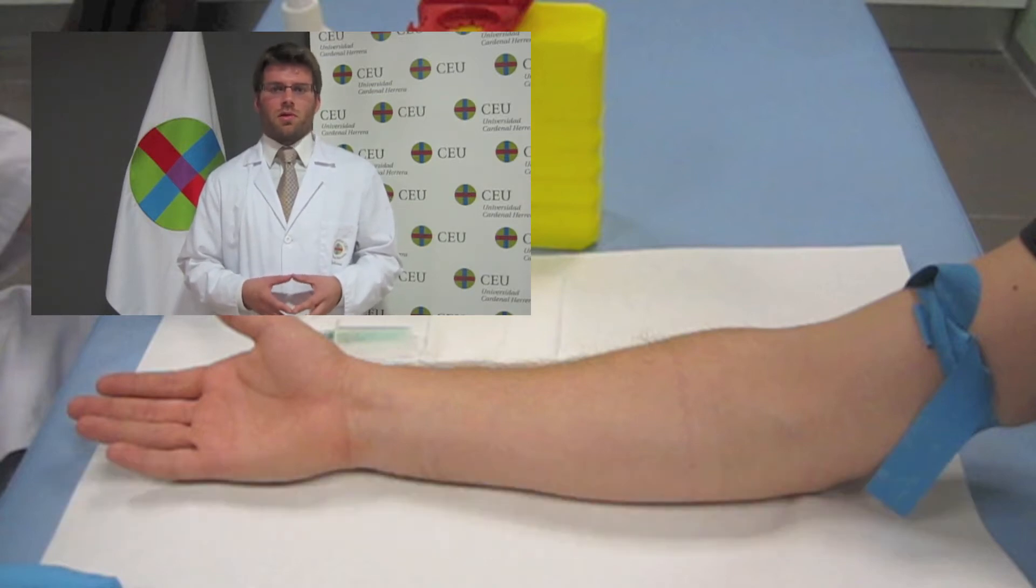Asimismo, ser impreciso en la punción o burgar con la aguja puede provocar la lisis de las células con el consiguiente aumento en la concentración de potasio.